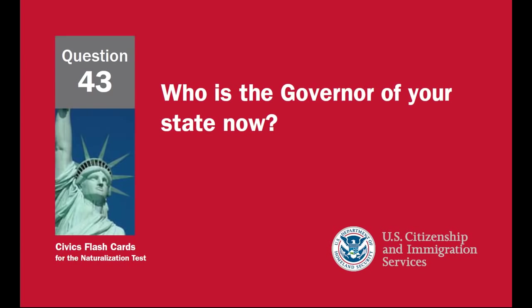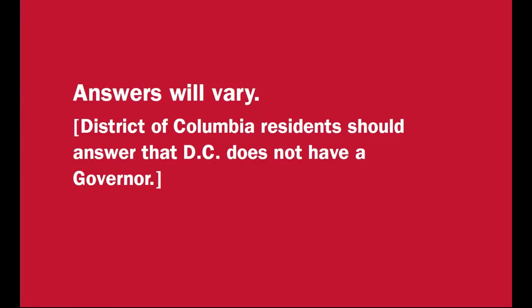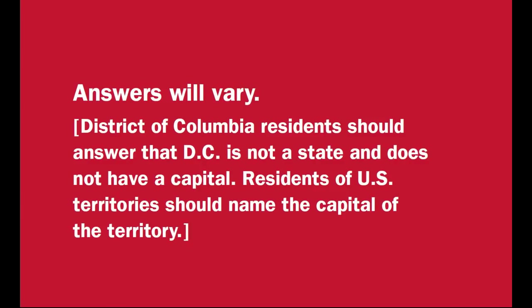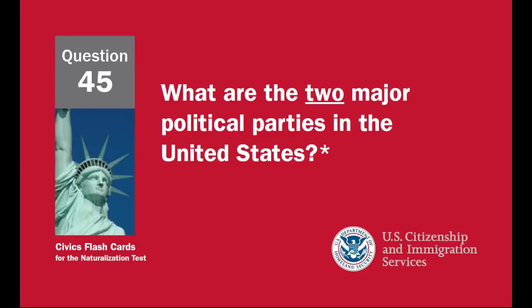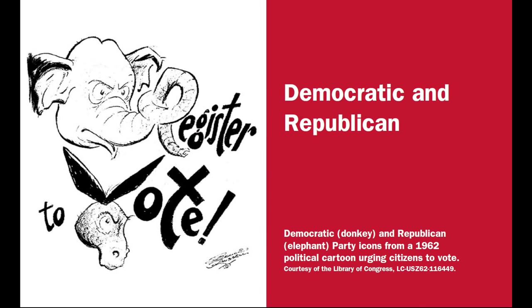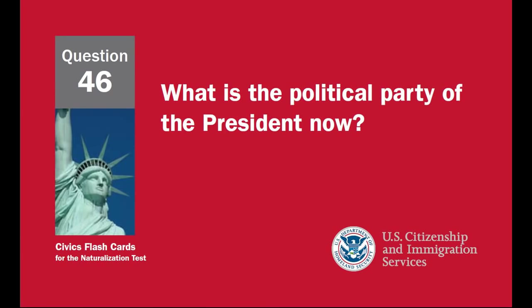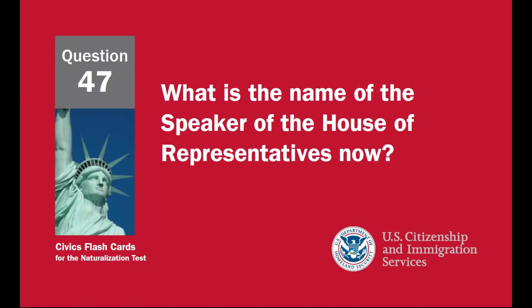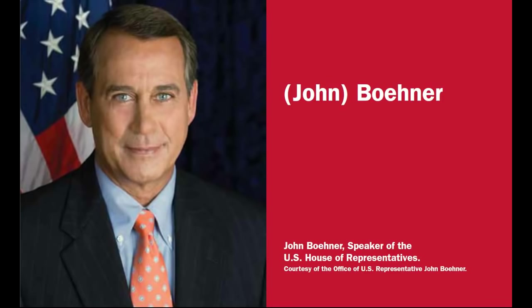Who is the governor of your state now? Answers will vary. District of Columbia residents should answer that D.C. does not have a governor. What is the capital of your state? Answers will vary. D.C. is not a state and does not have a capital. Residents of U.S. territories should name the capital of the territory. What are the two major political parties in the United States? Democratic and Republican. What is the political party of the president now? Democratic Party. What is the name of the Speaker of the House of Representatives now? John Boehner.